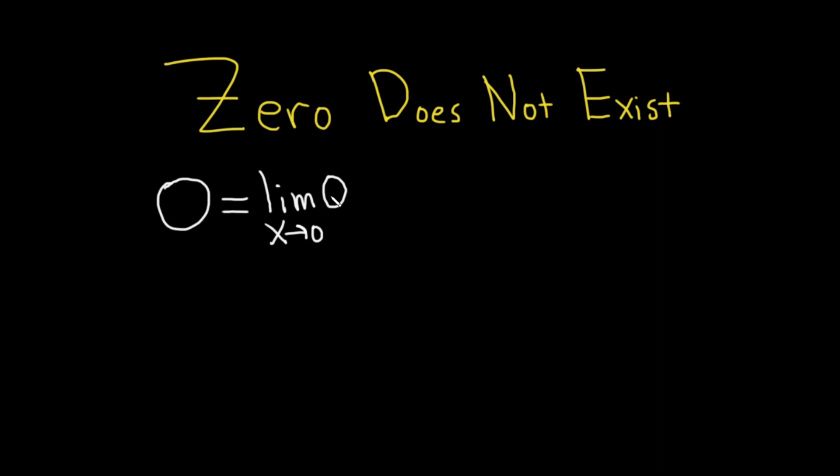In general, when you have the limit of a constant, which zero is a constant, you're just going to get a constant. So this is equal to this.